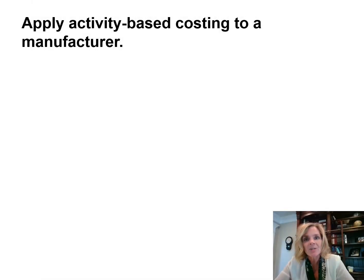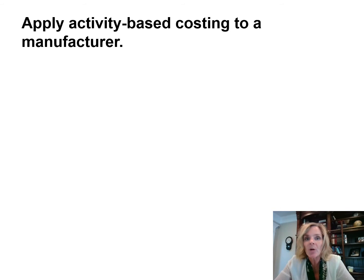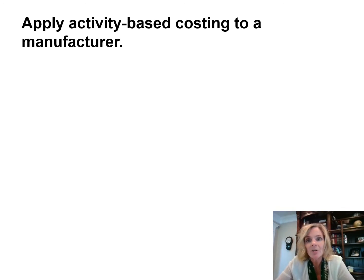In this learning objective, we'll discuss how to apply activity-based costing for a manufacturer. ABC does not replace an existing job order or process cost system. As illustrated in the previous learning objective, ABC assigns overhead into various cost pools in an effort to provide more accurate cost information. So ABC supplements rather than replaces these cost systems.